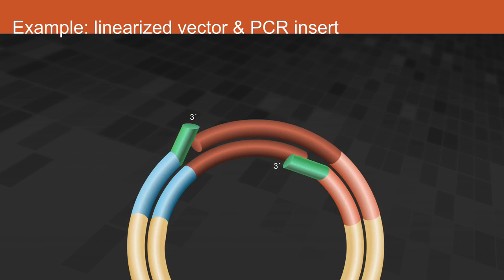When the overlaps anneal during the assembly process, there is a mismatch at the 3' end of the vector.